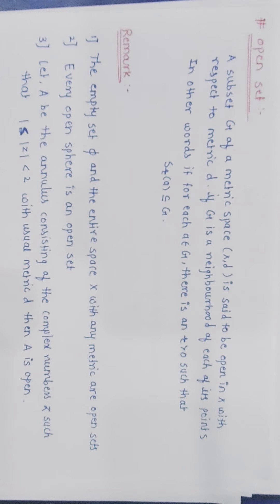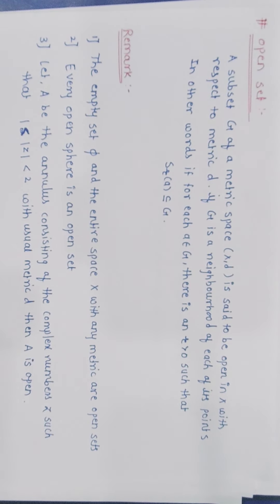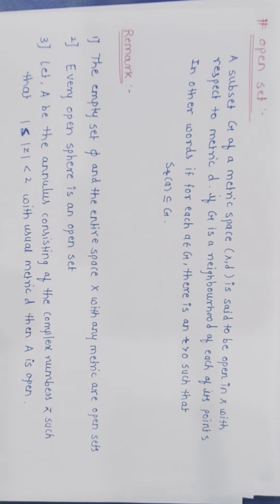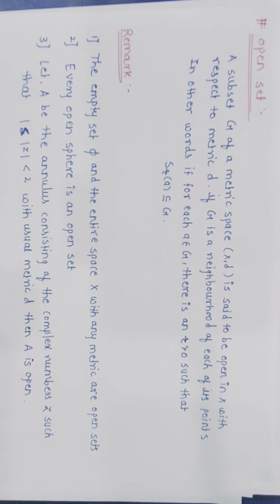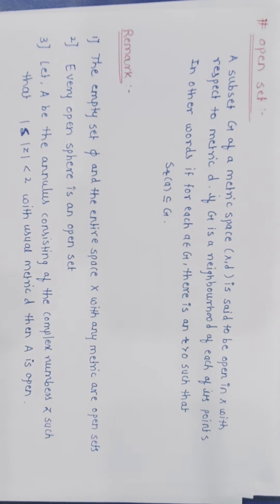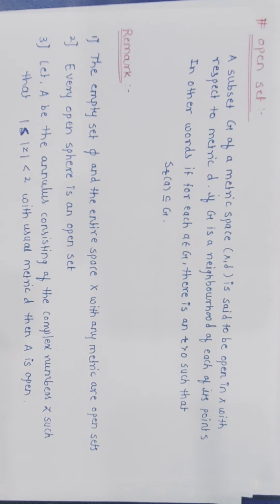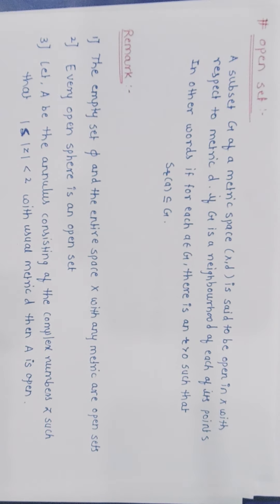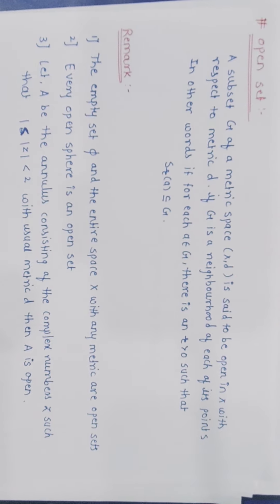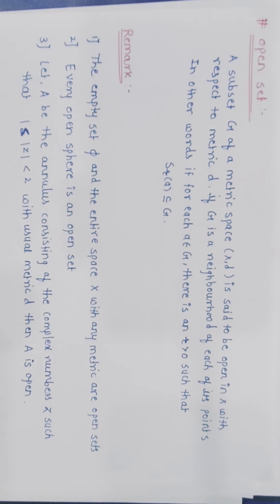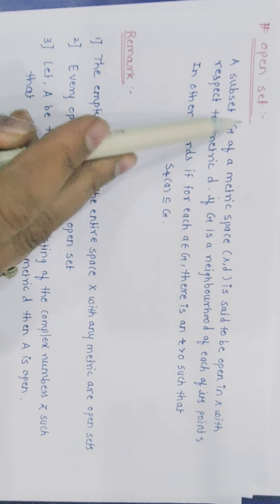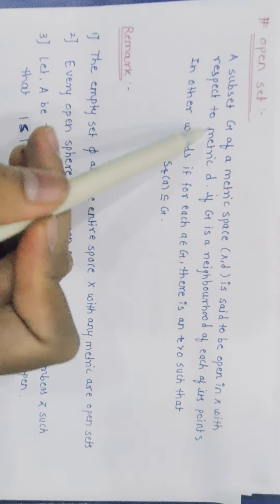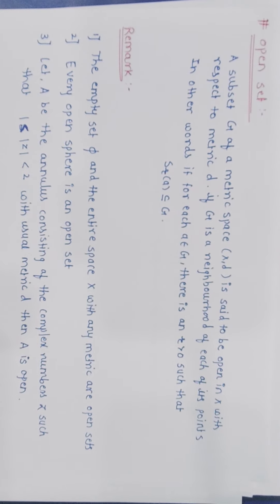Next definition: open set. A subset G of a metric space (X, d) is said to be open in X with respect to metric d, if G is a neighborhood of each of its points. In other words, for each a ∈ G, there exists r > 0 such that S_r(a) ⊆ G. Agar koi set G ho metric space X ka, usko open set kab bolenge — if G ke jo sare points hai unka neighborhood G itself hona chahiye. Then we can say G is an open set.